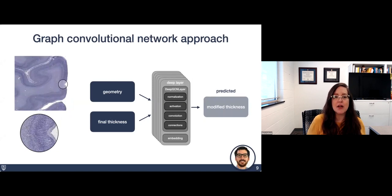After we have our trained network, then we can apply it to MRI data or histology data, such as what's shown here, where we know the geometry and the final thickness, but we don't know the modified cortical thickness. In this case, our convolutional network could be used to predict that quantity.